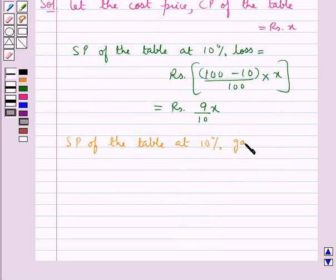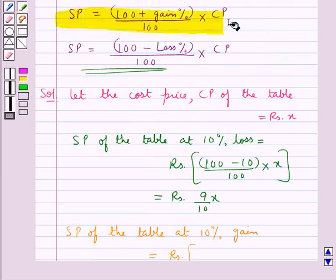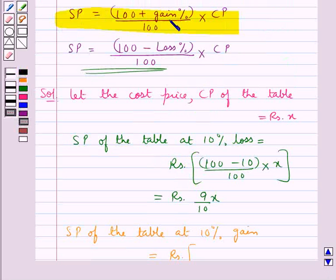Then next we find out the selling price of the table at 10% gain. We would be using this formula, so substituting the value for gain percent and CP.